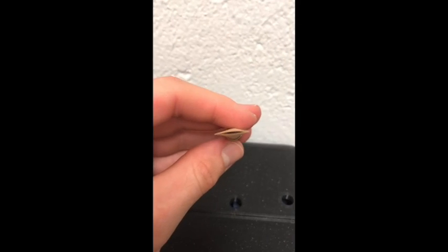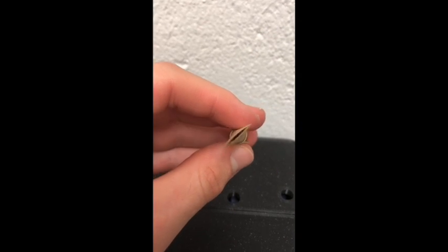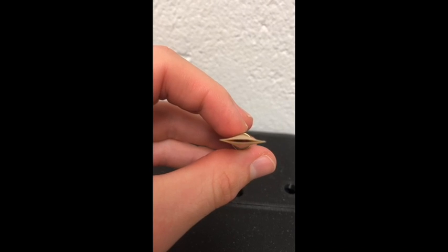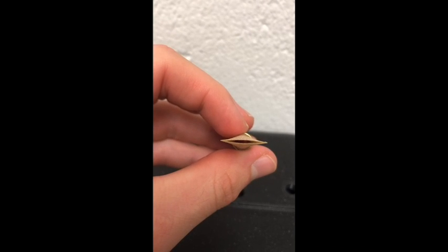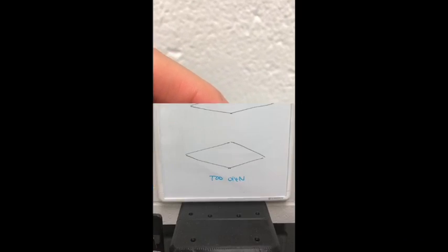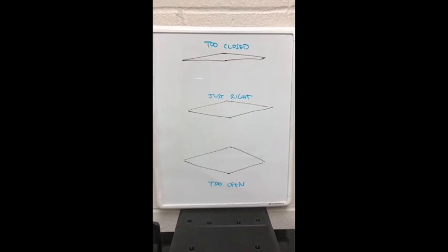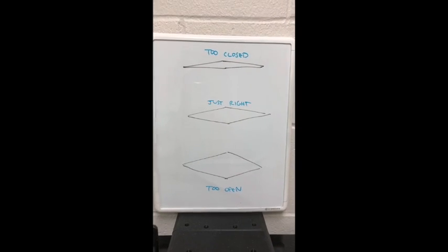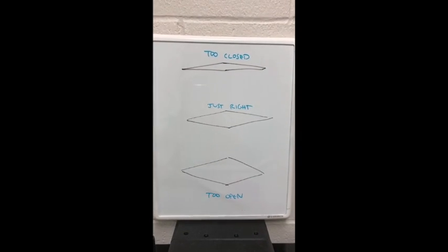And lastly, the tip of the reed. You want to make sure the blades are very thin and even. The tip opening is also very important. The tip opening is what's going to determine how much air you have to use to make the reed play.